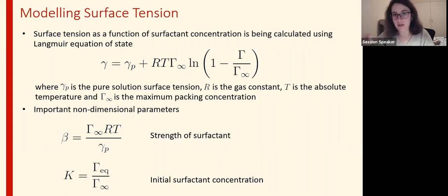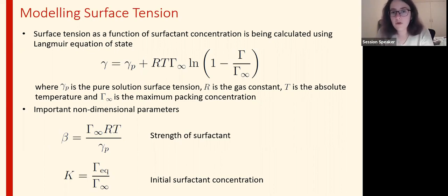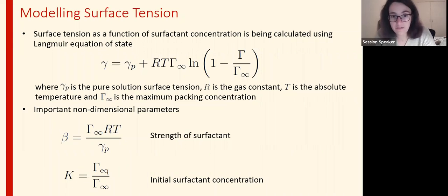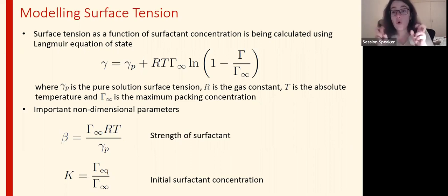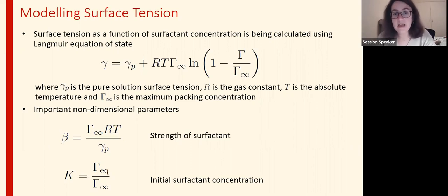To estimate γ∞, we measure the surface tension of the fluid for different bulk concentrations, plot those values, and fit to get γ∞. Normally that has a logarithmic form: it starts high, goes down, and then when it doesn't decrease anymore it reaches the equilibrium surface tension, which is typically at the CMC — that's the highest concentration you can add because the whole surface is covered. When we non-dimensionalize the equations, two important parameters emerge: the surfactant strength θ, which sits in front of the logarithm and indicates how fast we reach equilibrium surface tension, and k, which represents the initial surfactant concentration.